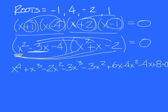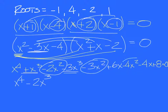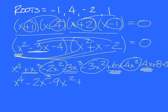The only thing left to do is simplify. How many x to the 4ths? Just one: x to the 4th. How many x to the 3rds? x to the 3rd minus 3x to the 3rd is negative 2x to the 3rd, so minus 2x to the 3rd. And how many x squares? I have three of them: negative 2x squared minus 3x squared combined is negative 5x squared, but I also have to combine it with negative 4x squared, so I get negative 9x squared. Then 6x minus 4x is 2x. And we just have the one constant left at the end: plus 8.